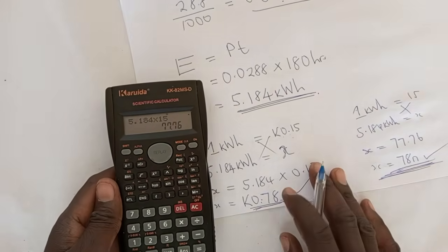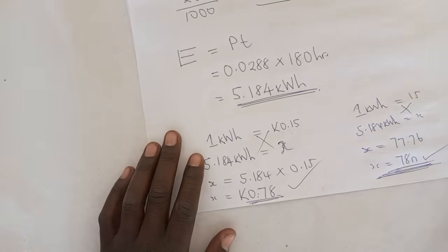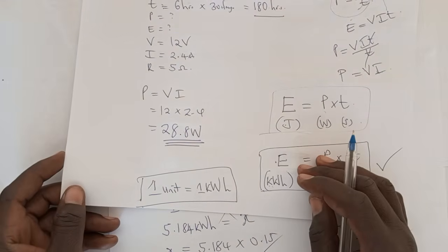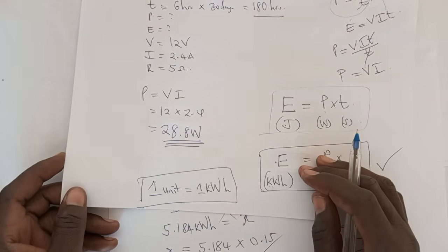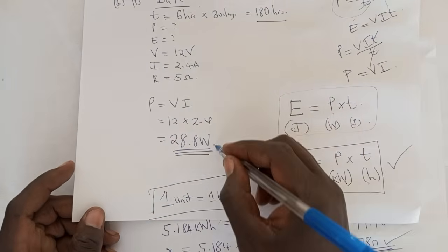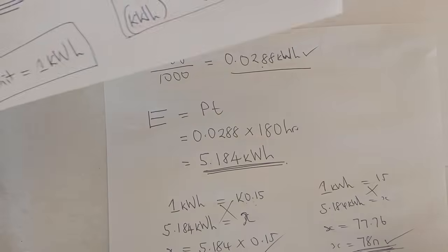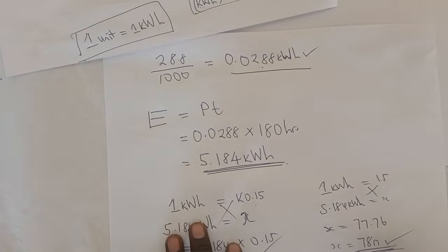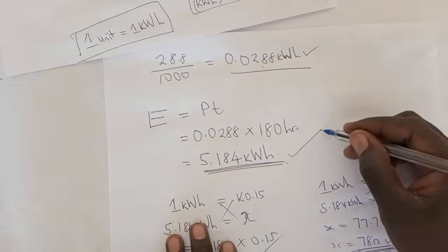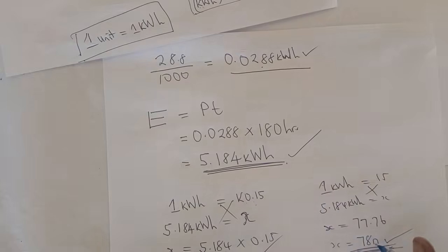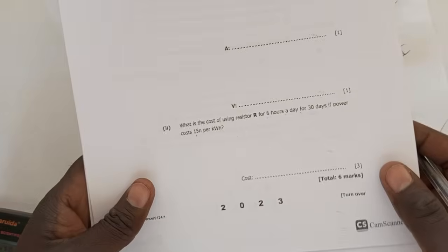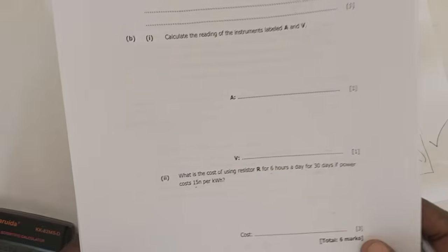You get your three marks as follows: one mark for calculating power, one mark for calculating energy in kilowatt hours, and one mark for the final cost answer. Six marks total for the full question. I hope this was helpful — bye!